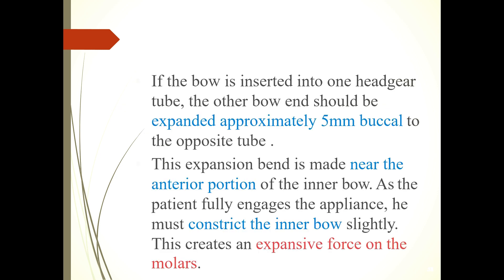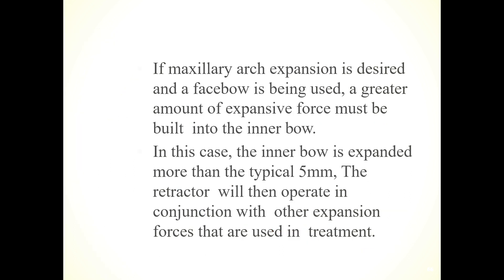If the bow is inserted into one headgear tube, the other bow end should be expanded approximately 5 mm buccal to the opposite tube. This expansion bend is made near the anterior portion of the inner bow. As the patient fully engages the appliance, they must constrict the inner bow slightly, which creates an expansive force on the molars. If maxillary arch expansion is desired, a greater amount of expansive force must be built into the inner bow, expanding more than the typical 5 mm.